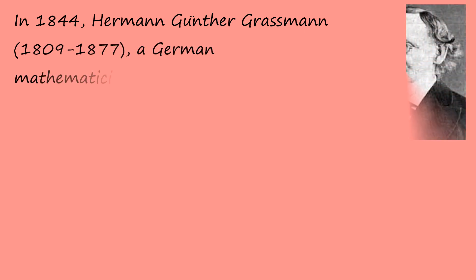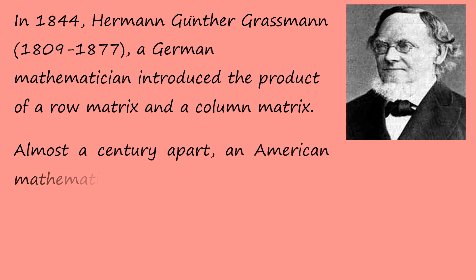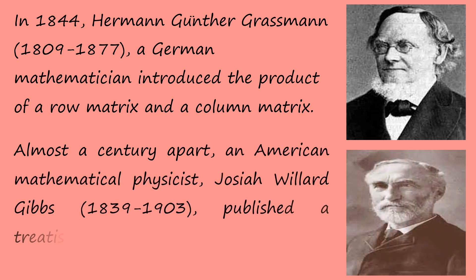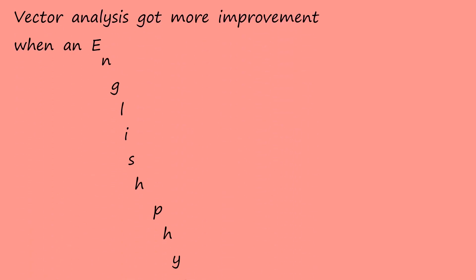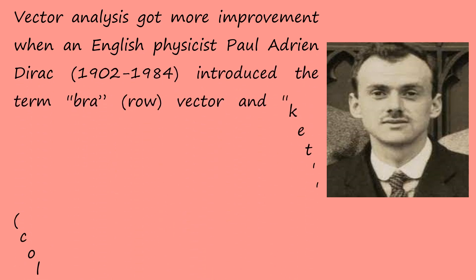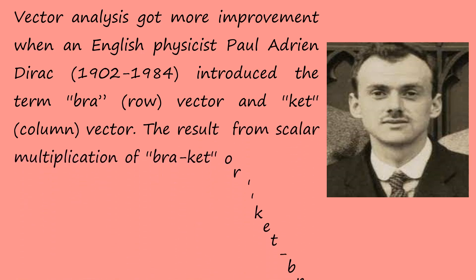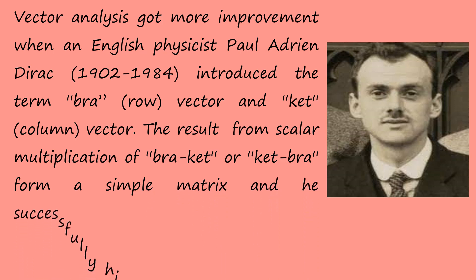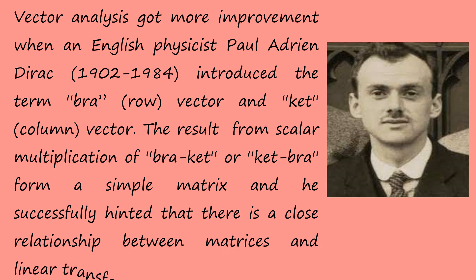In 1844, Hermann Günter, a German mathematician, introduced the product of a row matrix and a column matrix. Almost a century apart, an American mathematician Joseph Gibbs published a treatise on vector analysis to represent a general matrix called a dyadic. Vector analysis saw more improvement when an English physicist Paul Dirac introduced the terms bra-vector and ket-vector. The result from scalar multiplication of brackets or ket-bra form a simple matrix, and it is successfully hinted that there is a close relationship between matrices and linear transformations.